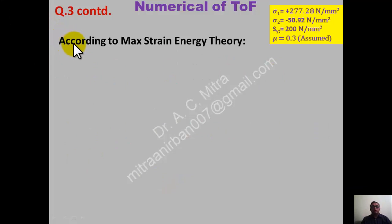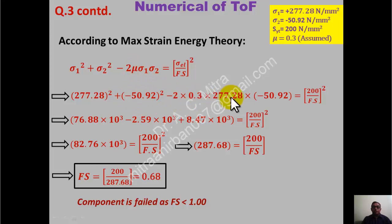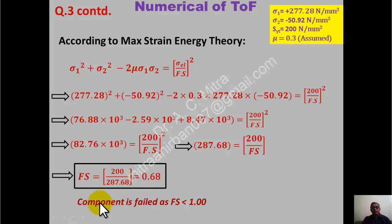Theory 3 (Maximum Strain Energy): sigma 1² + sigma 2² − 2 × mu × sigma 1 × sigma 2 ≤ (SYT/Fs)². Substituting: 277.28² + 50.92² − 2 × 0.3 × 277.28 × (−50.92) = 82.76 × 10³. Taking square roots: 287.68 = 200/Fs, giving Fs = 0.68. Less than 1, component failed. These three problems demonstrate how to apply theories of failure — from direct stress inputs to deriving stresses from applied forces, moments, and torques.